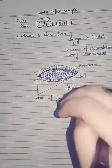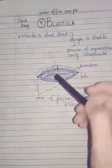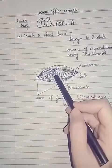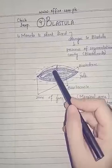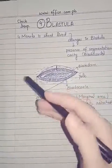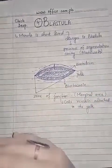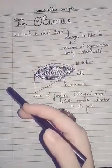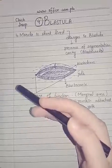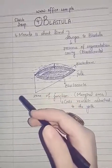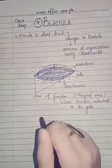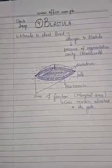A primitive streak or a groove will start to appear, which will help in the migration of the cells into the cavity. Hence, more layers will be formed which will further be differentiated into different organs and organ systems.